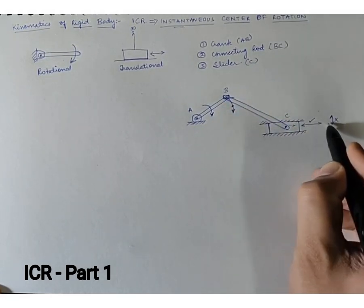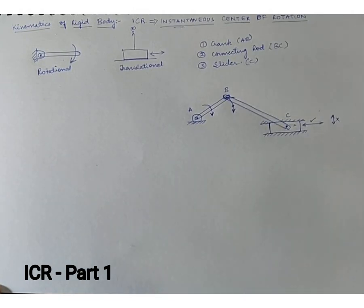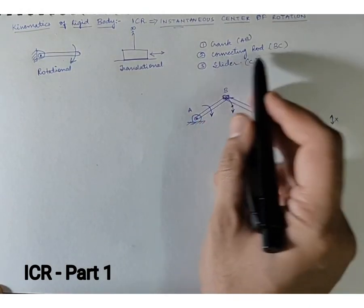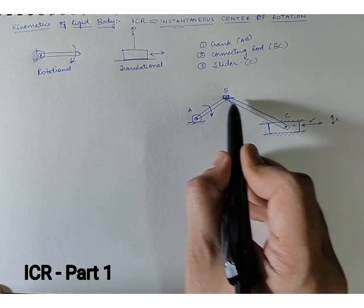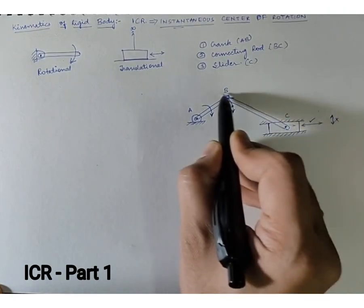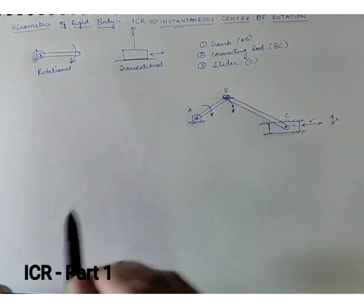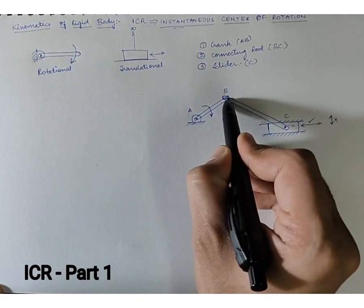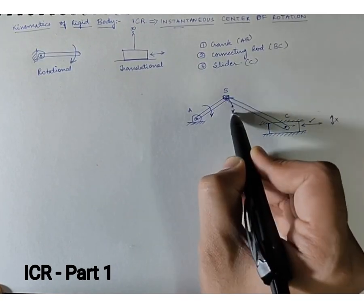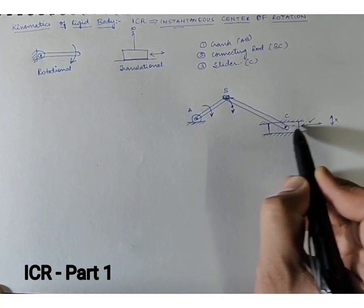But if you observe the connecting rod, the connecting rod has two of its points which are in different motion. When you look at B, B is just rotating, whereas C is just sliding. So B is in a combination of rotation as well as translational motion.